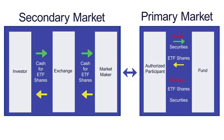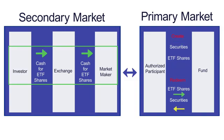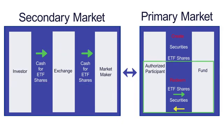Now let's talk about the other side: redemptions. Investors want to sell those shares of the ETF, selling them to the market maker. The market maker is buying those shares and selling the underlying basket to hedge themselves. At the end of the day, they now own more shares of the ETF than they would like, so they go to the fund as an authorized participant and say they would like to redeem those ETF shares. They deliver back those ETF shares.